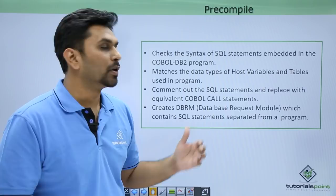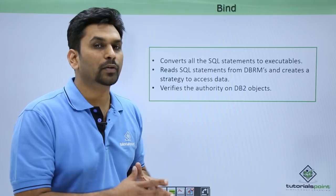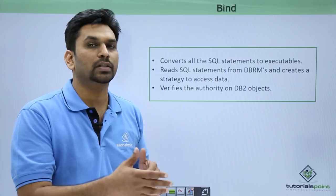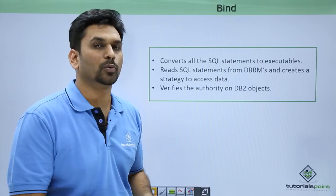The DBRM is used as input to the bind process. In the bind process, it converts all the SQL statements to executables — it takes all the SQL statements and converts them to executable form so the compiler can read and execute them. It reads SQL statements from the DBRM and creates a strategy for how to access the data, then verifies the authority on DB2 objects.